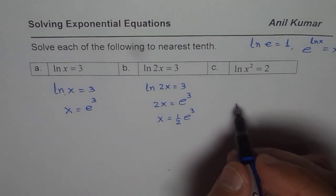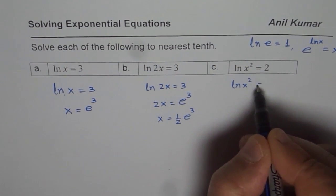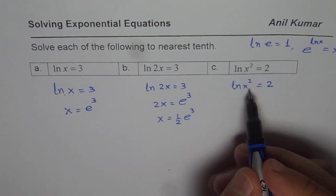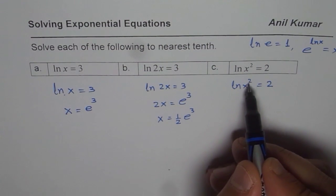Now in this particular case, it is x squared. We have ln x squared equals 2. Note that domain in this case, x could be negative also, since square can make it positive.